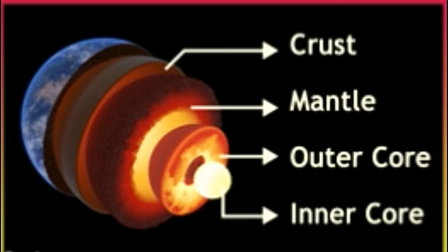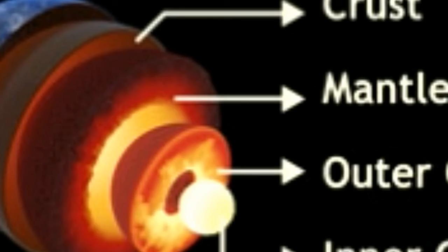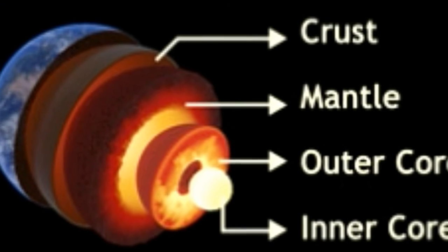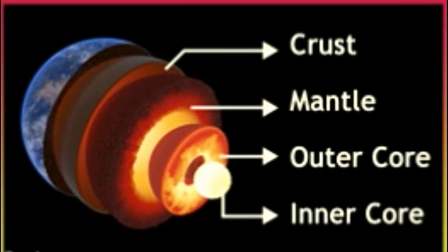The mantle, the largest layer of the Earth, is made up of iron, aluminum, calcium, magnesium, silicon, and oxygen. In fact, most of the Earth's mass, about 80%, lies in the mantle.